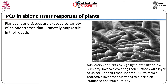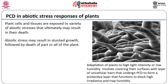Programmed cell death in response to abiotic stress: Plant cells and tissues exposed to a variety of abiotic stresses may ultimately result in their death. Abiotic stresses include toxins such as salinity, metals, herbicides, and gaseous pollutants including reactive oxygen species, as well as water deficit, waterlogging, high and low temperature, and extreme illumination. Plants show adaptations to stress including mechanisms to tolerate adverse conditions or to exclude toxic conditions. Abiotic stress may also result in stunted growth followed by death of part or all of the plant.